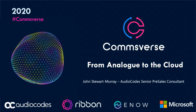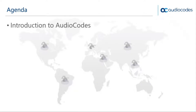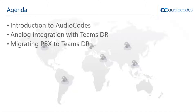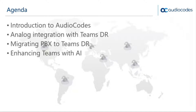This is a smorgasbord of different bits around Teams migration. I work for AudioCodes as a technical consultant in the UK. We'll look at analog integration with Teams direct routing, connecting old phones to Teams, small PBXs, and migrating large PBXs to Teams direct routing. We've struck up a technology partnership with another company that provides a fantastic migration tool. We'll also look at adding artificial intelligence to Teams via cognitive services in the cloud.